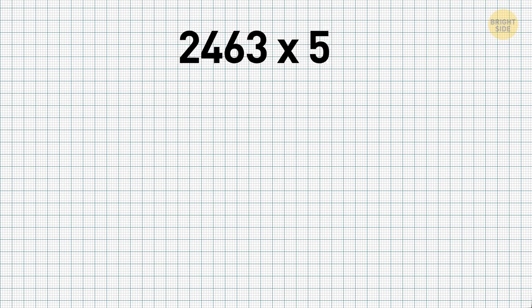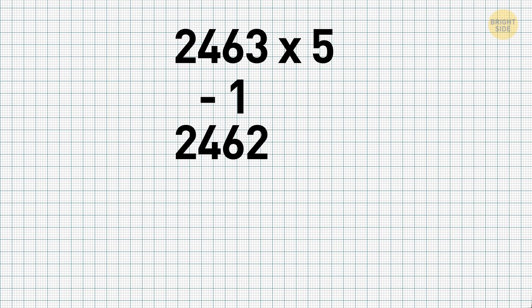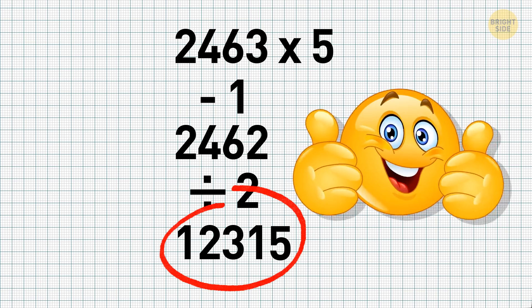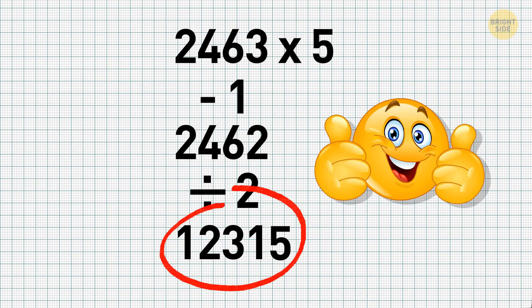Now let's try odd numbers. We'll take 2,463 as an example. First of all, subtract 1 from the number, getting 2,462. Now divide it by 2 again, resulting in 1,231. And then, instead of a 0, put a 5 at the end, which will get you 12,315. This is your answer. 2,463 times 5 equals 12,315.